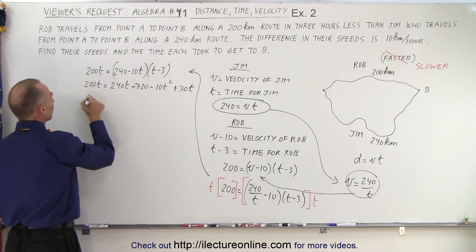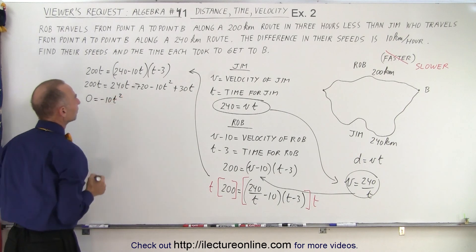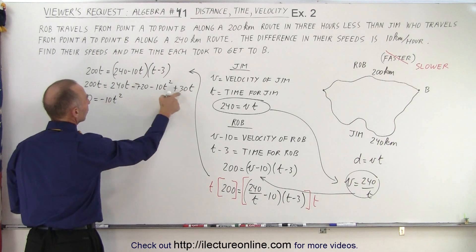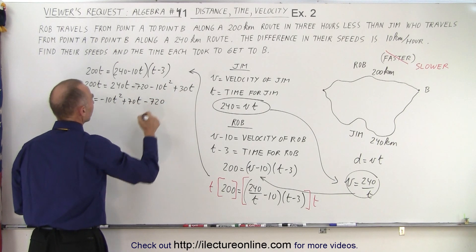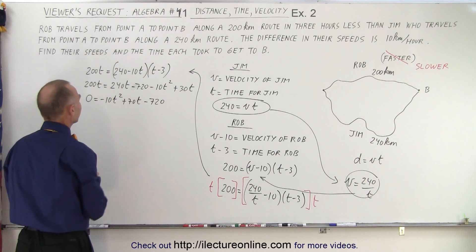Moving everything over to one side, we have minus 10T squared, 240 minus 200 is 40, plus 30 is 70, plus 70T, and minus 720.